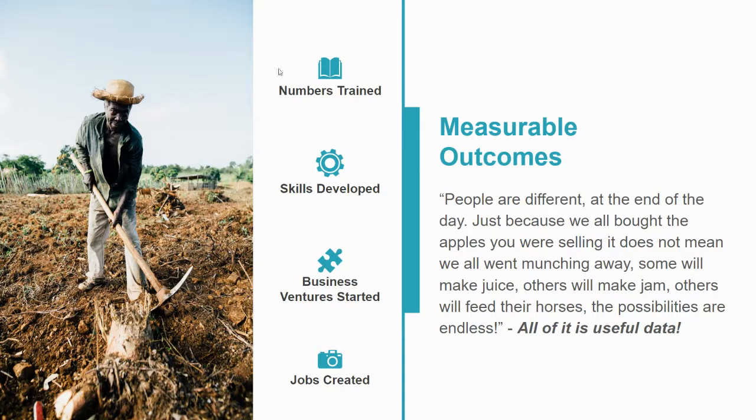Typically, you will find some projects will only report the numbers trained, for example. But if you really want to set yourself apart, you want to be able to talk about the skills that your beneficiaries have developed. You want to be able to talk about what business ventures they've started, whether it's market gardening or whether it's that they are now environmental activists. All of this is useful data.